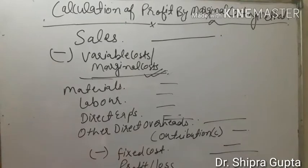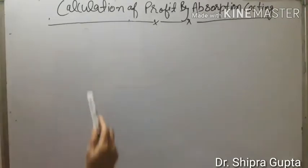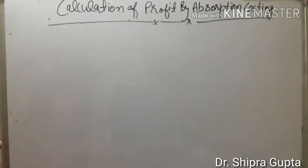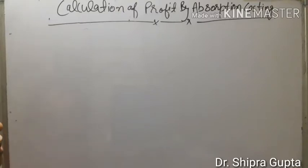By this method we know about marginal cost and profit or loss by the formula of marginal costing. Now we will know how profit is calculated by the absorption costing method. In this method we include both fixed cost as well as variable cost in costing.